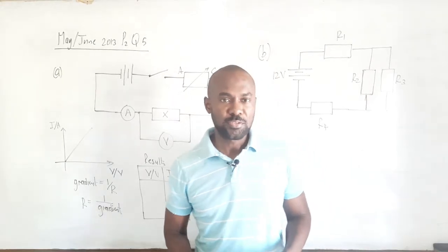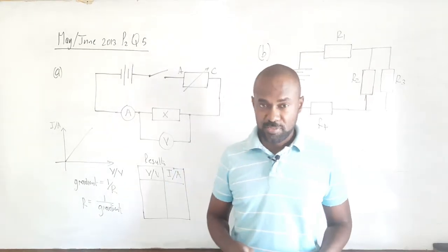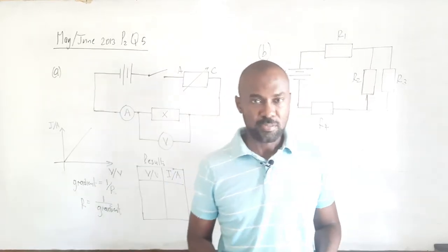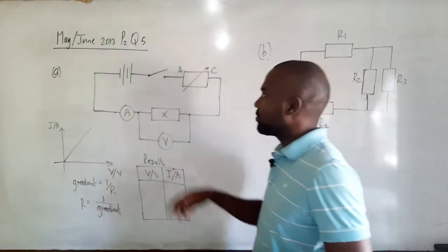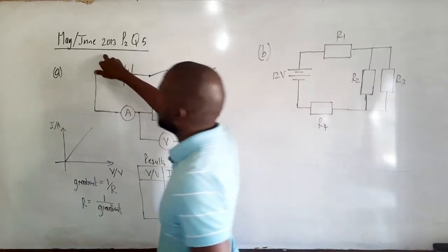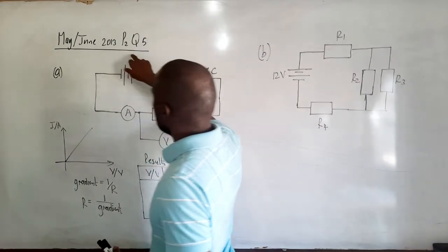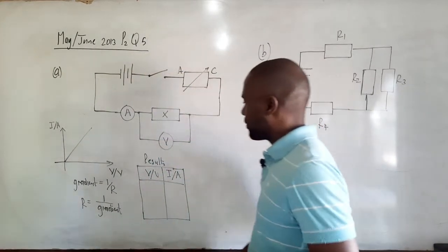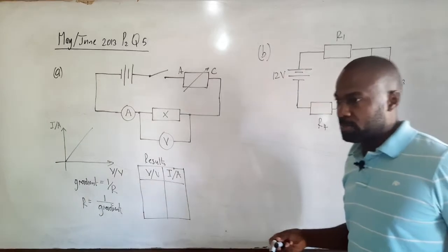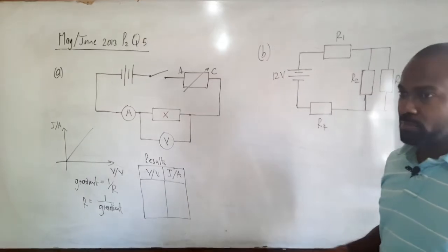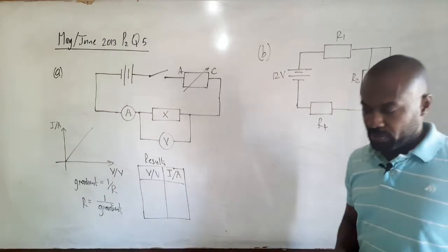In this video we'll continue to look at CSEC physics possible questions, and we'll be looking at a question from May/June 2013 Paper 2 Question 5. This is a question which deals with electricity.